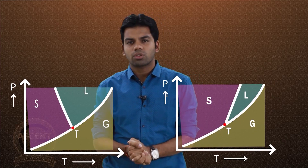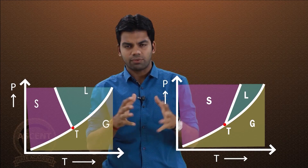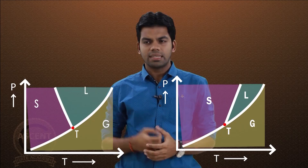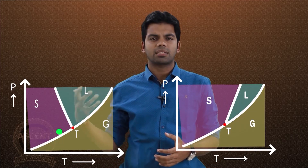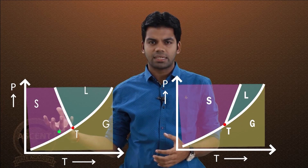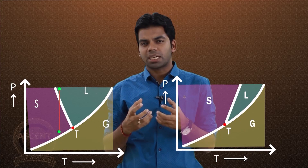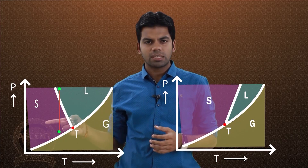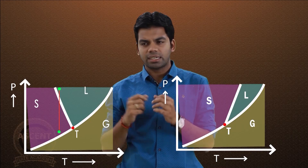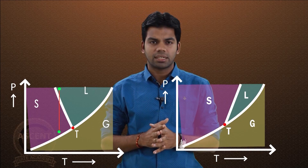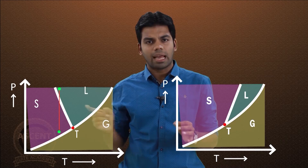The significance of the melting curve slope: in the case of water, if I have ice at minus 10°C and I increase its pressure while keeping the temperature constant, it moves into the liquid region on the graph — meaning compressing ice converts it to liquid water.